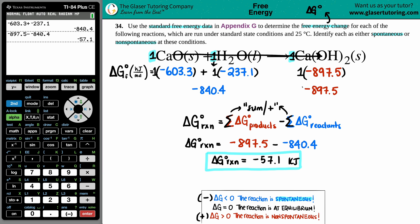Now let's see. -57.1, that's a negative value. All delta G's that are negative are spontaneous. So no extra energy is needed to go from reactants to the product.